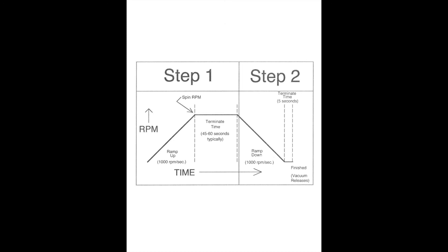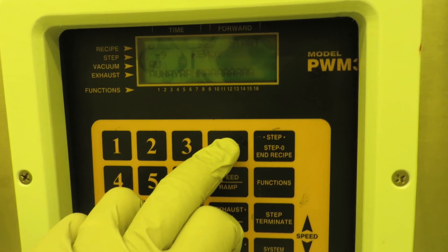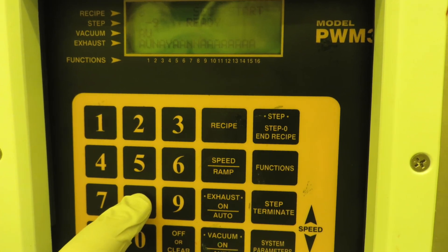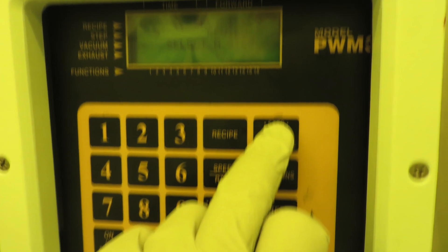Now hit the step button and then hit the number one key. Now you're ready to review what's entered for step one. Now hit the speed key, which will tell you what speed is entered for step one.